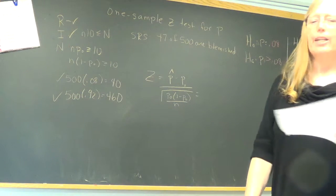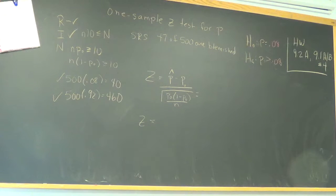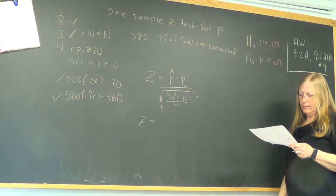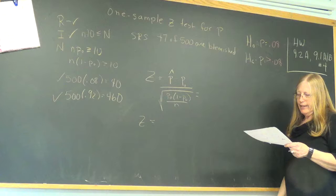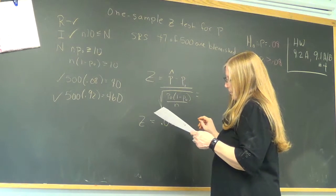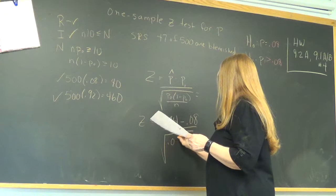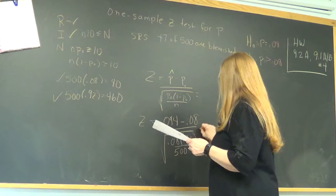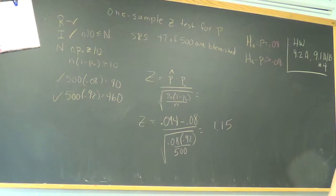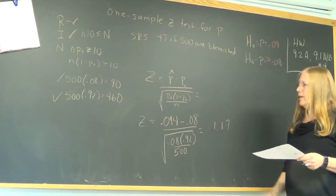Anyone know what 47 out of 500 is? 0.094. I got the z-score. I got 1.16. So let's go ahead with that. I got 1.15. Yeah, we'll take the middle. I'm sure we're doing it correctly.